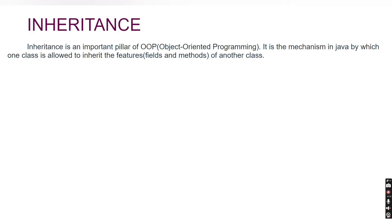Inheritance is a mechanism in Java by which one class is allowed to inherit the features — that is, fields and methods — of another class. Consider a situation where you have one class and you need to declare another class and use the properties of the old class in the new class; you can make use of inheritance in that situation. We will see all the details of inheritance in the demo, but let's first understand the theory.